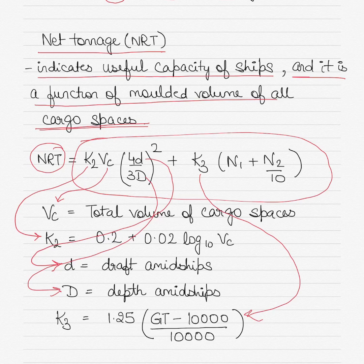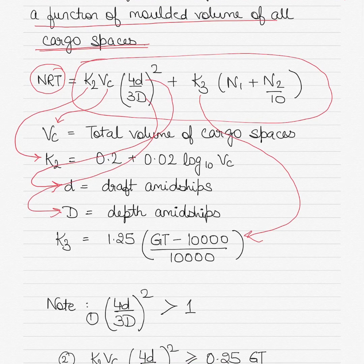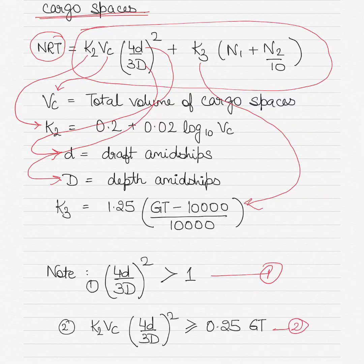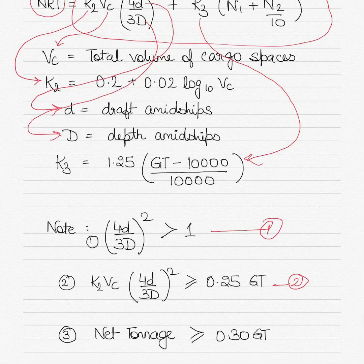Now before I explain what (N1 + N2)/10 is, a few points to note here: remember (4d/3D) squared should always be greater than 1. The second thing you have to note is the product of K2·Vc multiplied by (4d/3D) squared should always be greater than or equal to 0.25 times the gross tonnage. And finally, the net tonnage value should be greater than or equal to 0.30 of the gross tonnage.